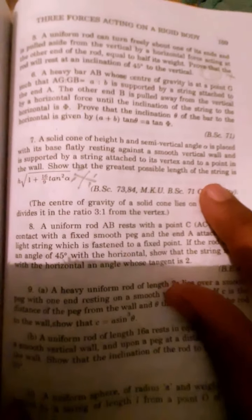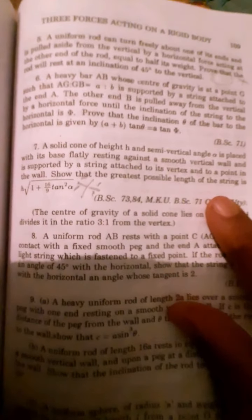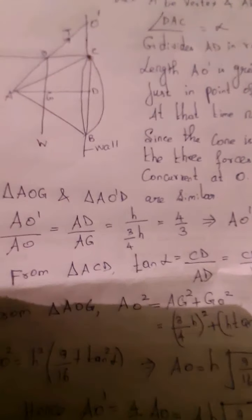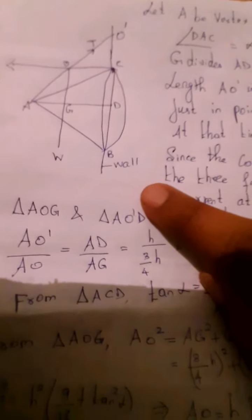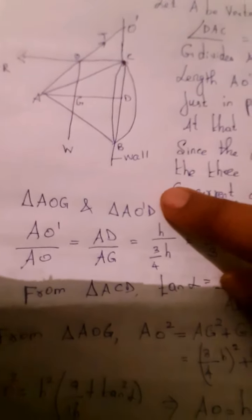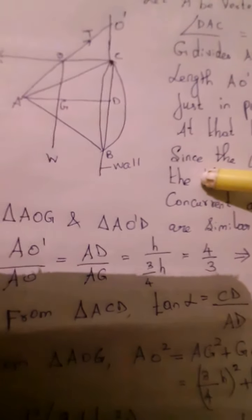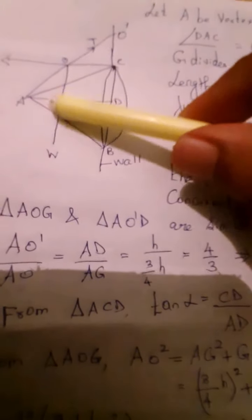Problem 3. A solid cone of height h and semi-vertical angle alpha is placed with its base flatly resting against a smooth vertical wall, and is supported by a string attached to its vertex and to a point in the wall. Show that the greatest possible length of the string is h times the square root of (1 + 16/9 tan² α). The cone ABC has height H and semi-vertical angle alpha.